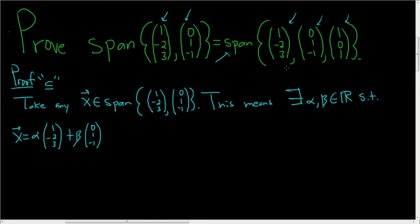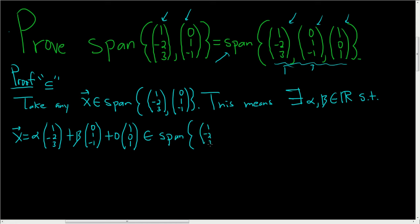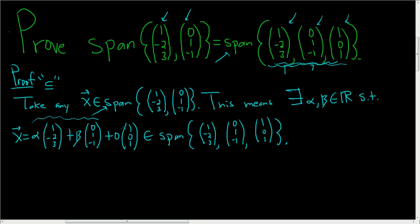We already have the first and second vectors. We can simply add 0 times the third vector — we haven't changed anything — and now we have x written as a linear combination of all three vectors. That's exactly what it means for x to be in the span of (1, -2, 3), (0, 1, -1), and (1, 0, 1). We started with x in the left set, wrote what it meant to be there, then wrote it as a linear combination of the right-side vectors by adding 0 times the missing vector. So x belongs to the right span.